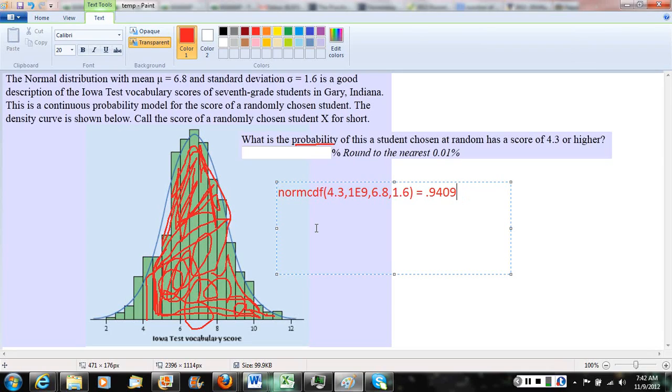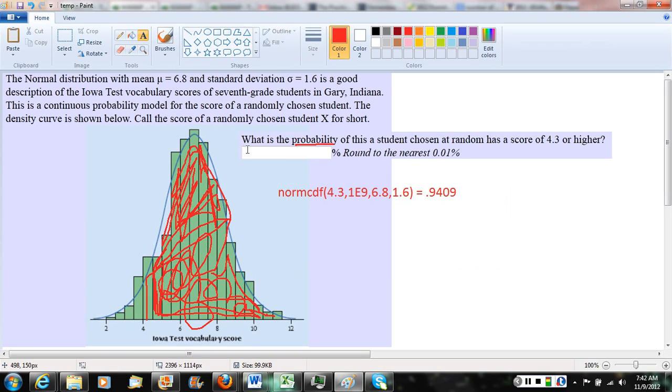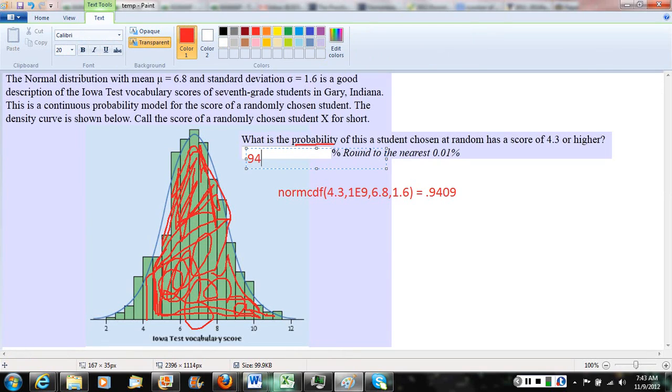So it's telling us about 94% of the area is to the right of 4.3. And interpreting that in terms of our problem, it means if we choose a student at random, there's a 94.09% chance that the student we chose at random would have a score of 4.3 or higher. When we enter that in WAMAP, notice they're asking for a percentage. So when we enter that percent, we want to make sure to multiply by 100, so it would be 94.09%.